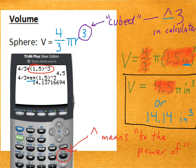So, that's all there is to it pretty much for surface area and volume of a sphere.